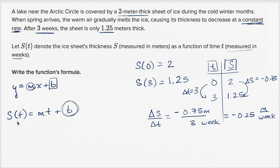Well, one way to think about it is, what's S(0) going to be? S(0) is going to be m times 0 plus b. S(0) is going to be b. But we already know that this ice sheet starts off at two meters thick. So S(0) equals b equals 2. So b is equal to 2.